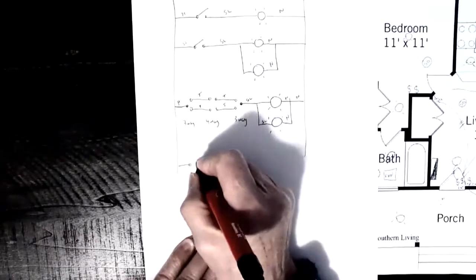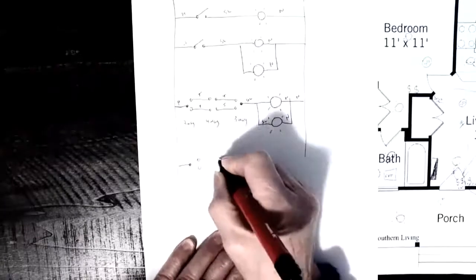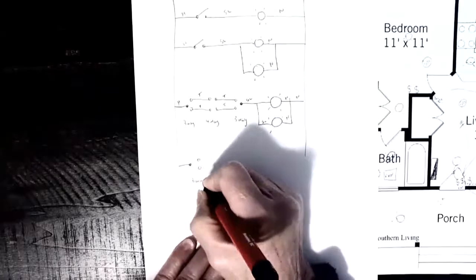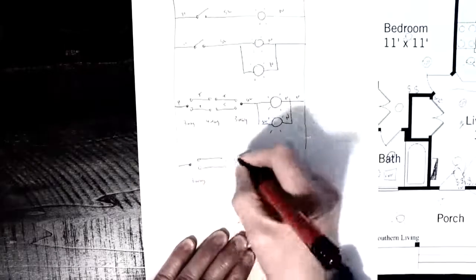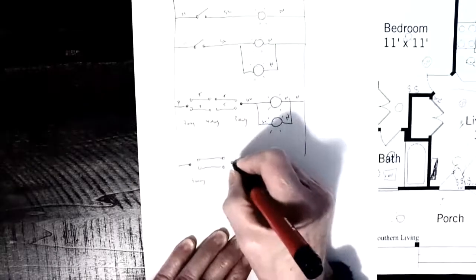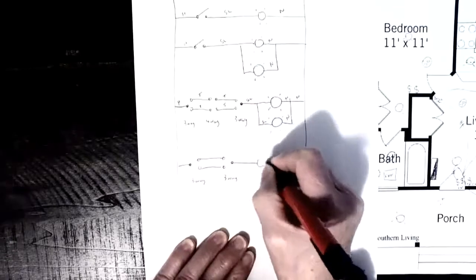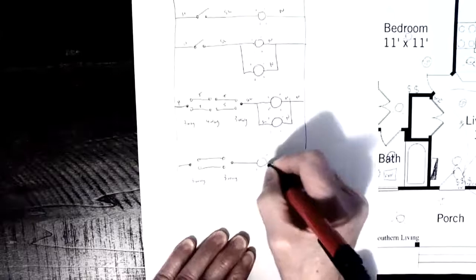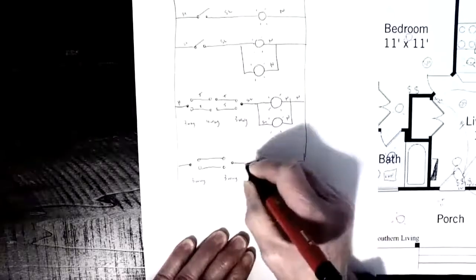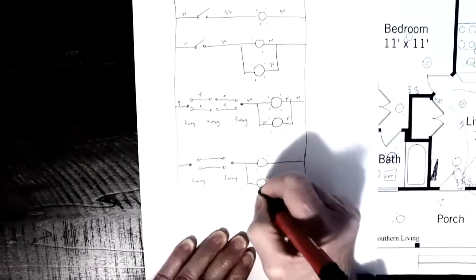So in this case, we only have two three-way switches. That's a three-way. And that's your second three-way. And then it goes up to three pot lights, and the pot lights are all in parallel with each other.